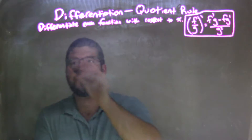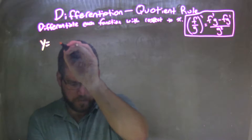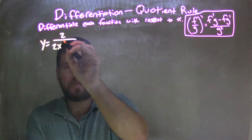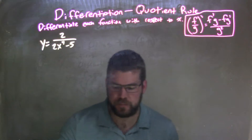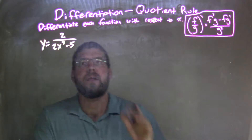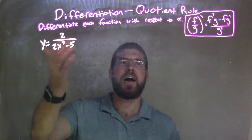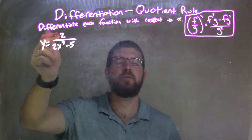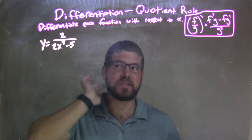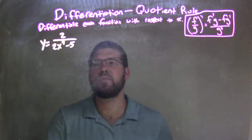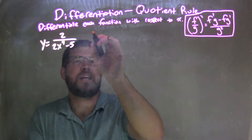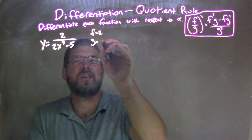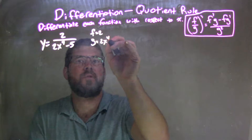So if I was given this function, y equals 2 over 2x to the 4th minus 5. What I want to do here is label what is my f and what is my g. Our function here has two parts: f, which is 2, and g, which is 2x to the 4th minus 5. I'll quickly just label that — f is equal to 2 and g is equal to 2x to the 4th minus 5.